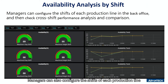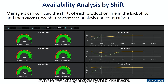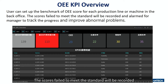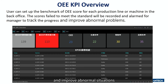Managers can also configure the shifts of each production line and then check cross-shift performance analysis and comparison from the availability analysis by shift dashboard. Once users set up the benchmark OEE score for each production line or machine, scores that fail to meet the standard will be recorded and allow managers to check the progress and improve abnormal situations.